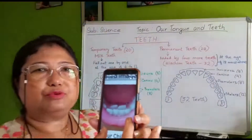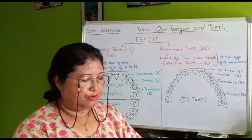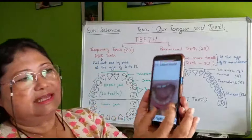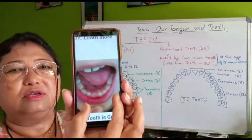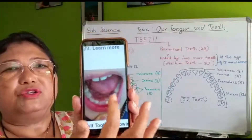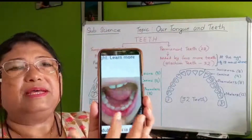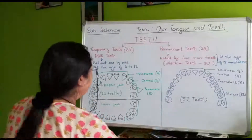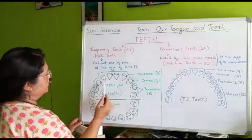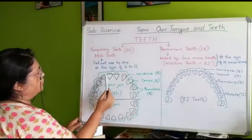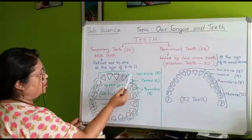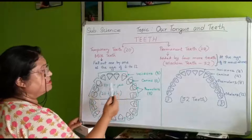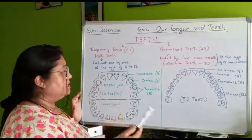Now see — these are the lower jaw. The lower jaw has 10 teeth and the upper jaw also has 10 teeth, making 20 teeth altogether. Here in the picture you can count: one, two, three, four, five, six, seven, eight, nine, ten — upper jaw has 10 teeth and lower jaw also has 10 teeth.